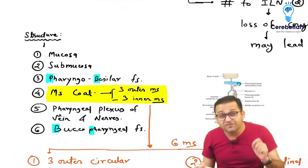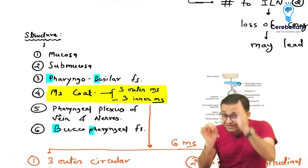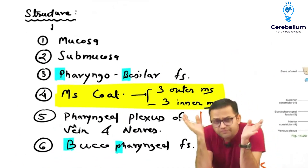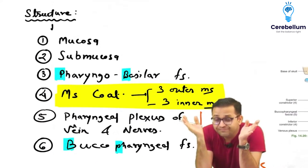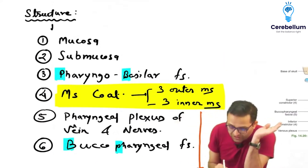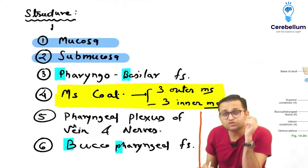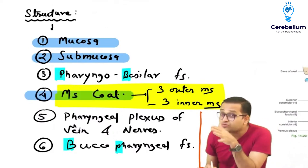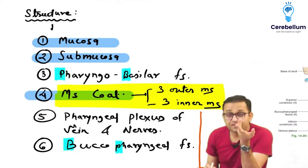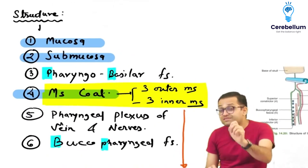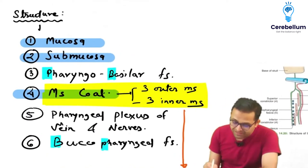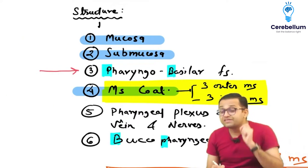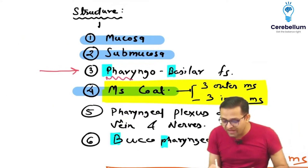What are the different structures? We are cutting the pharynx and we are going to see the relation. When we do the dissection, the pharynx is part of the GIT, and the GIT has layers: mucosa on the inside, then submucosa, then muscle, and outside there is the adventitia connective tissue. In a similar way, the pharynx has the same kind of layers, but in between there is a fascia on the inner side which is related to the pharynx.